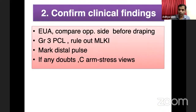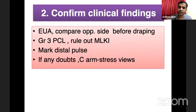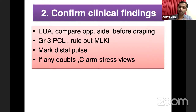Before putting the knife on the patient, always confirm clinical findings — this is important because as mentioned, the MRI may appear completely normal for most of our patients who come late. If the radiologist is not well-versed with musculoskeletal MRI, they may write that the PCL MRI is normal. Always perform a good clinical examination. More importantly, once the patient is anesthetized, do an examination under anesthesia and compare with the opposite side before draping — this gives much more information than clinic examination.